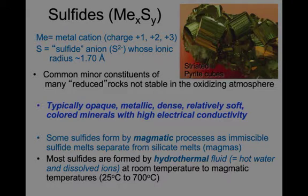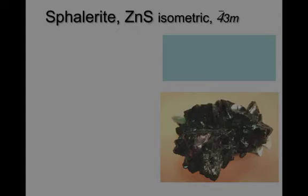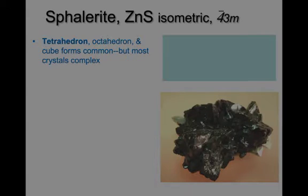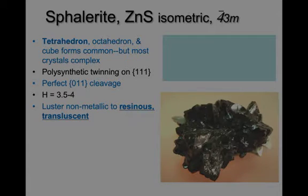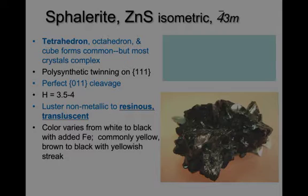First, let's look at sphalerite, which is zinc sulfide. It's an isometric mineral that rarely forms tetrahedrons, and even more rarely octahedrons or cubes. In most cases, as in the lower right, it forms rather complex crystals. It has polysynthetic twinning on the (1,1,1) plane, and a perfect cleavage on (0,1,1). Hardness is 3.5 to 4, which is intermediate for sulfides, and its characteristic feature is that the luster is non-metallic to resinous and translucent. Color varies from white to black with addition of iron — commonly yellow where it has low iron, to yellow-brown to black with the highest amounts of iron — and the streak is always a yellowish-brown.